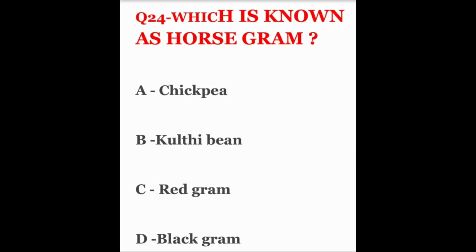Question 24. Which is known as horse gram? The options are chickpea, kulthi bean, red gram, or black gram. The correct answer is kulthi bean.